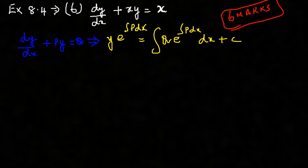In this particular example, p is equal to x because of xy, and q is also equal to x.